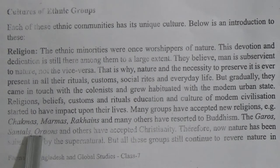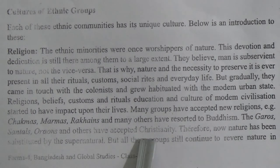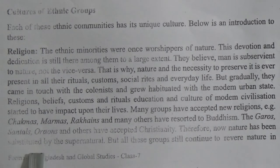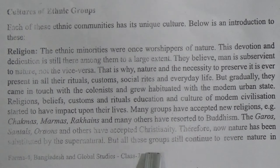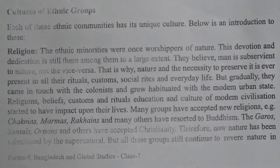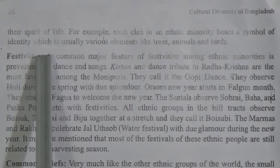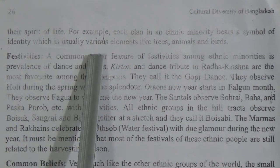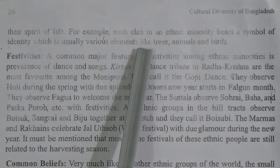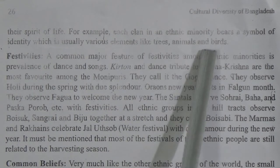Therefore, now nature has been substituted by the supernatural. But all these groups still continue to revere nature in their spirit of life. For example, each clan in an ethnic minority bears a symbol of identity, which is usually various elements like trees, animals, and birds.